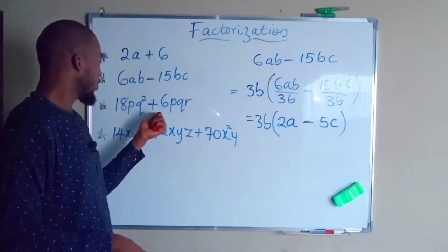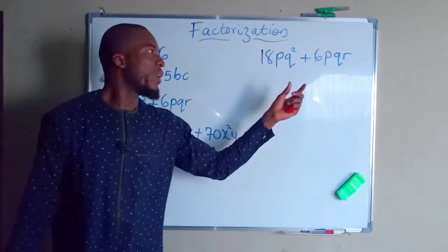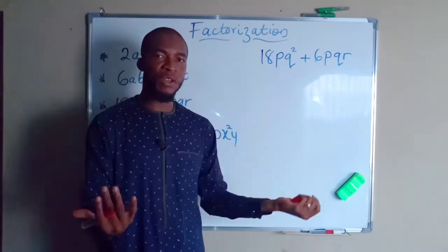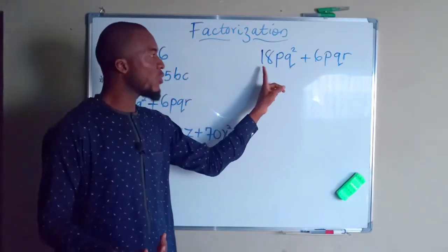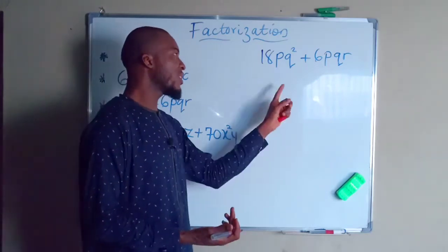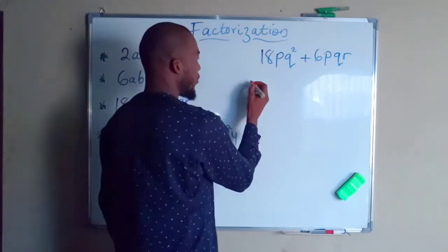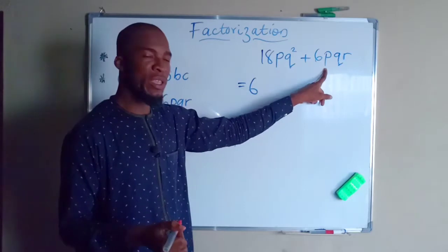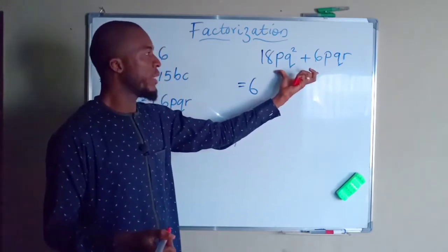Let us move to the third expression: 18pq² plus 6pqr. We have two terms. First, group the numbers: 18 and 6. The greatest number that can go into 18 and 6 without remainder is 6, because 6 goes into 18 three times and into 6 one time. For the letters, we have p in both terms, so p is a common factor.